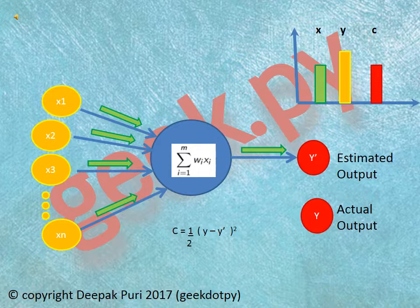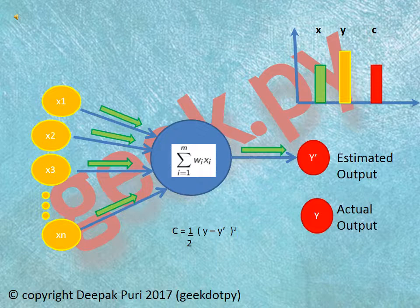Then this estimated output is checked against the actual output and our cost function is applied on it. We can apply any other cost function - there are other cost functions as well - but here we are using this cost function.